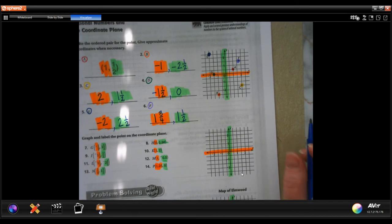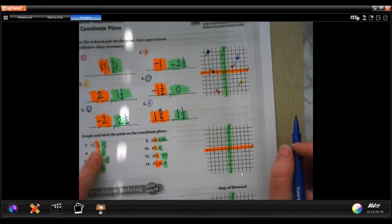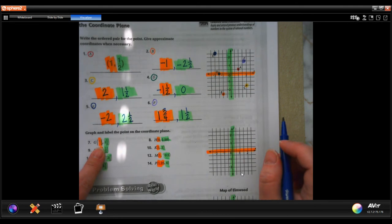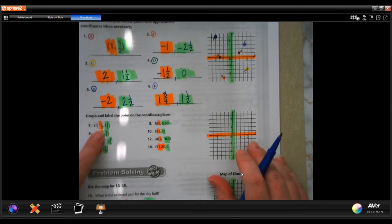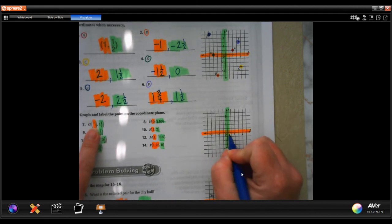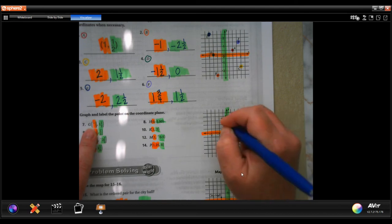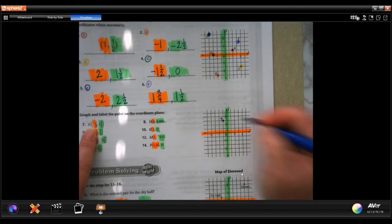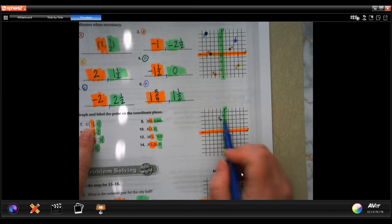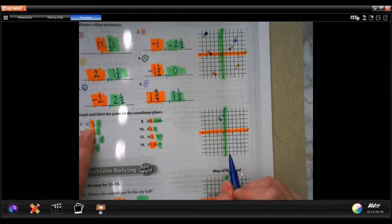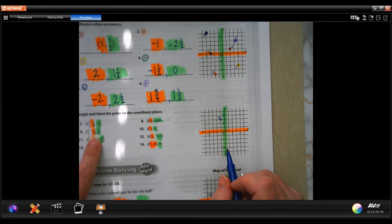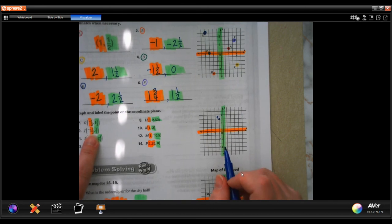So now we're going to go down and it wants us to label them, or to plot them and label them. I did the same thing, green and orange, so that you know which one comes first. So orange first, negative one half, that's here. Then we're going to go up one and a half. That's right there. That's G. You have to label it. I know it's hard because it's pushed together and it's an itty-bitty one, but you just got to do it.